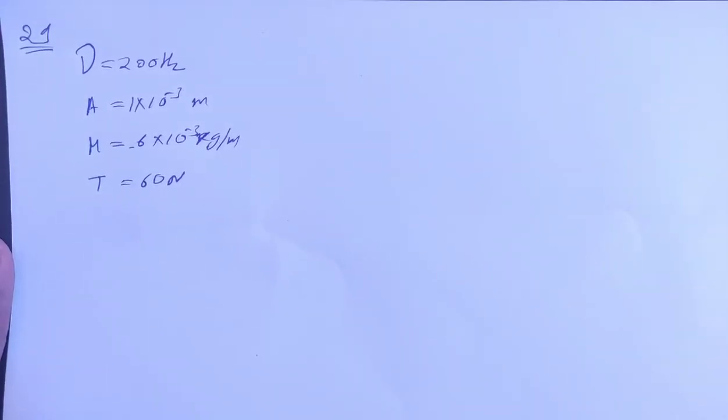HC Verma Solution, Chapter 15 Wave Motion, Question Number 29. A 200 Hz wave with amplitude 1 mm travels on a long string of linear mass density 6 grams per meter kept under a tension of 60 Newton. Find the average power transmitted across a given point on the string and find the total energy associated with the wave in a 2 meter long portion of the string.